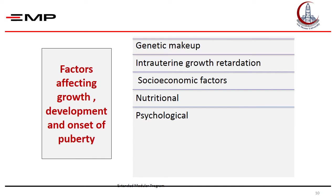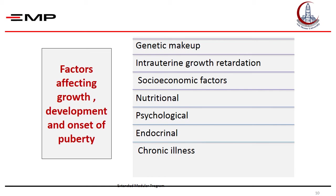Absence, neglect, or abuse by parents will lead to emotional deprivation and psychological problems that will be reflected on growth, development, and behavior of the child, as being loved, belonging to a family, and feeling safe are basic needs for a human being. Hormones — especially growth hormone, thyroid hormone, and sex hormones — directly control growth and puberty, and in case of disruption due to endocrine diseases, there will be various forms of abnormalities. Chronic severe illnesses such as liver disease, renal disease, and chronic severe anemia are often associated with disorders of growth and development as well as delayed puberty.